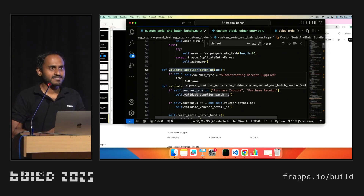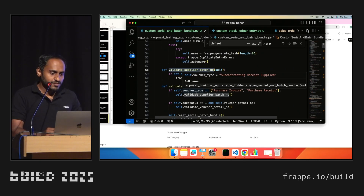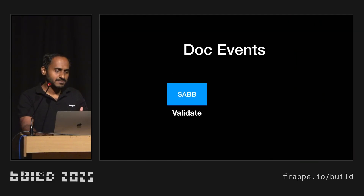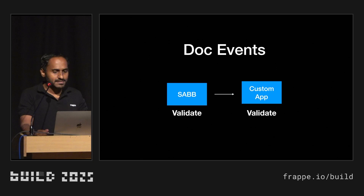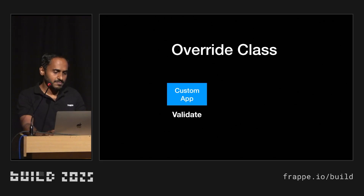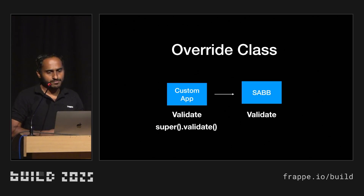Developers should understand that the Frappe teams are constantly fixing bugs, constantly improving the code, fixing security issues. If you write code like that — copying the entire class — your customers won't get those fixes. So what is the best approach for override doc type class? With doc events, the standard doc type validate will call first and then the custom app validate. But if a developer wants to call his custom function first and then the standard doc type validate, he can use the override class — but for that he must use the super validate function so that it will call the standard doc type method as well.